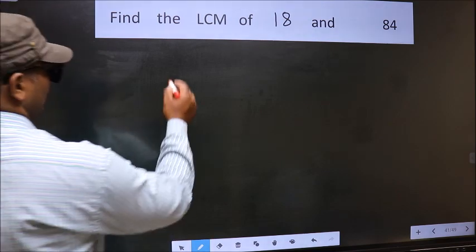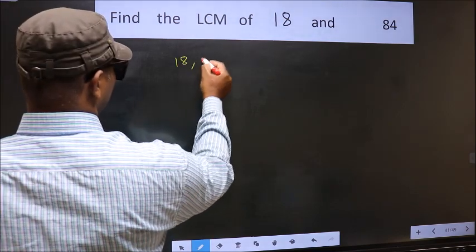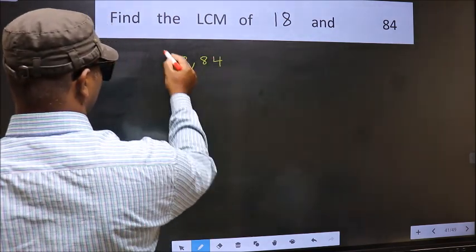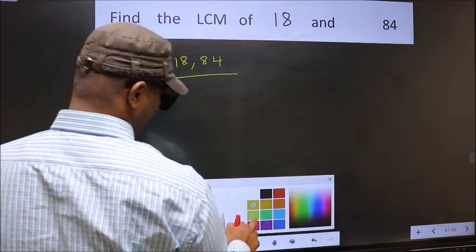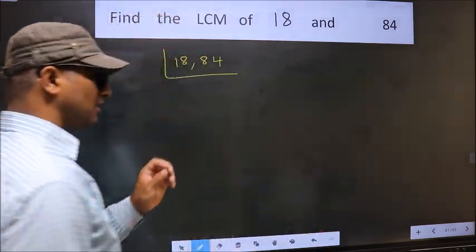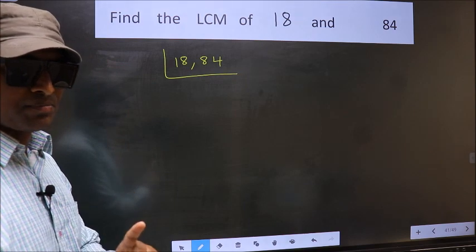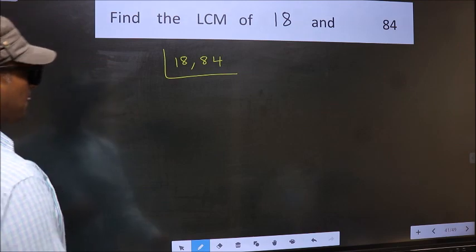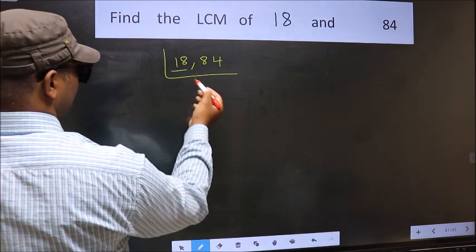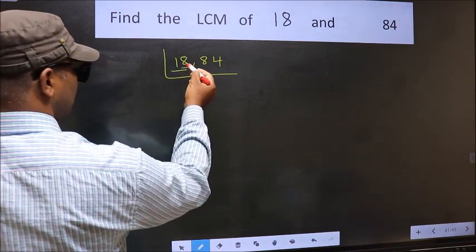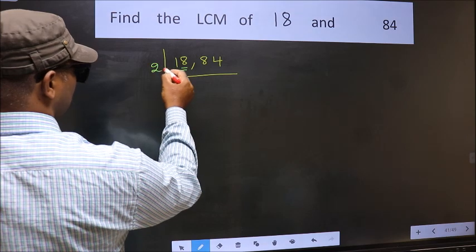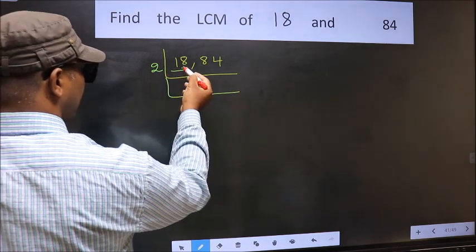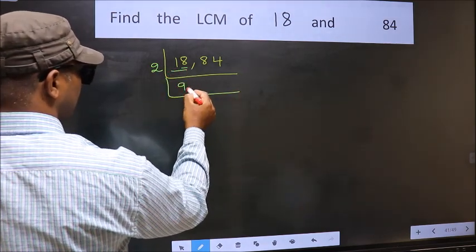18, 84. This is your step 1. Now you should focus on the first number which is 18 here. For this number, last digit 8 is even, so take 2. When do we get 18 in the 2 table? 2 nines 18.